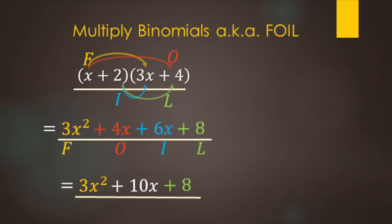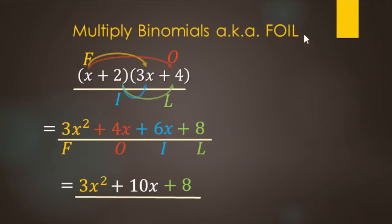In this video we are going to be looking at multiplying binomials, and the acronym that we can use is FOIL. FOIL is unpopular with some teachers because it only works when you multiply binomials — it doesn't work for any number of polynomials. So just a word of warning there. But I do find that it works really well when we get to factoring.